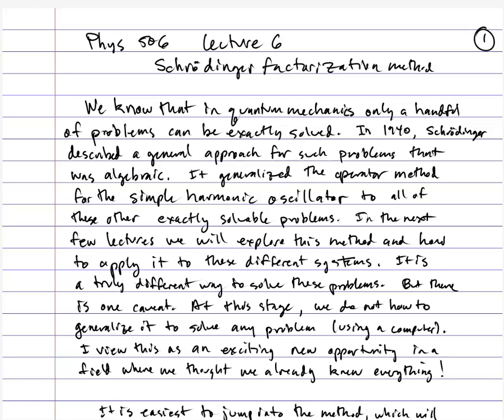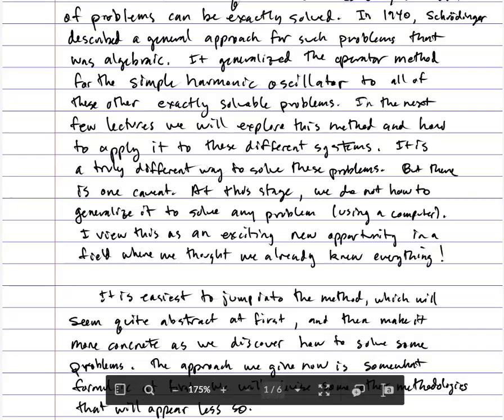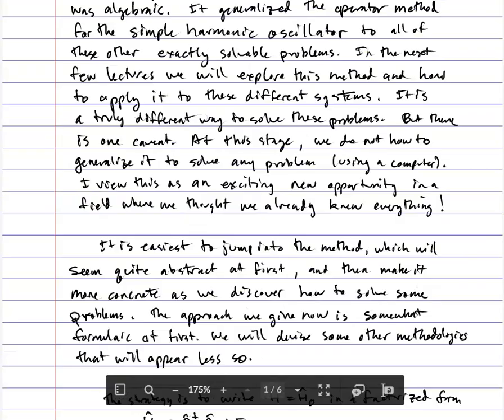It's very interesting that 14 years after Schrödinger determined the wave equation, he came up with this factorization method. It was in 1940 and 1941 that he worked on this problem. He was in Ireland at the time, escaping the Nazis from World War II, and he did this work at the University of Dublin. It was published in the Proceedings of the National Academy of Science for Ireland.